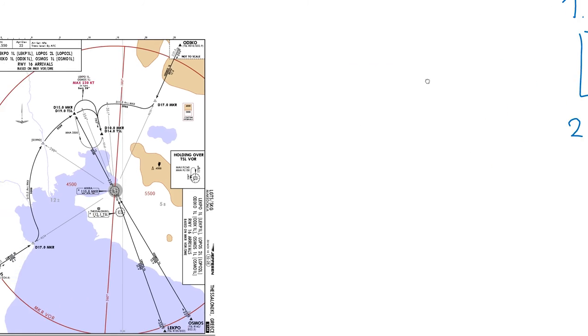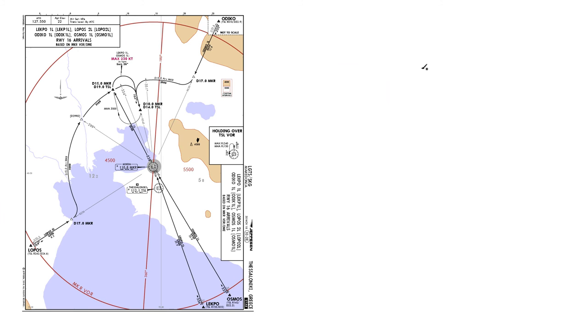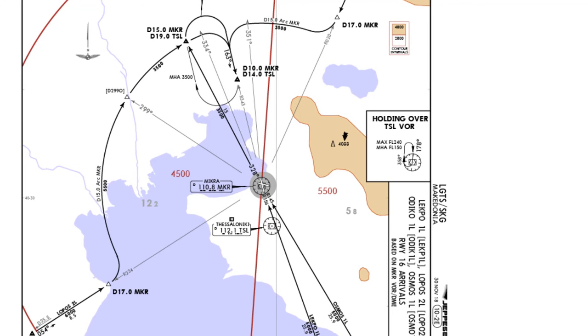So let's jump to an example. We have to fly across this specific DME arc. The arc radius is 15 DME and the arc angle is 334 minus 234, so it's 100 degrees.